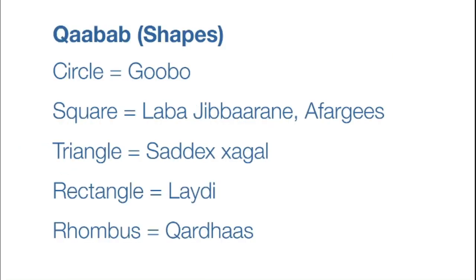Shapes in Somali is qabab. Circle is qobo. Square is lavajibbarane, or afargas.